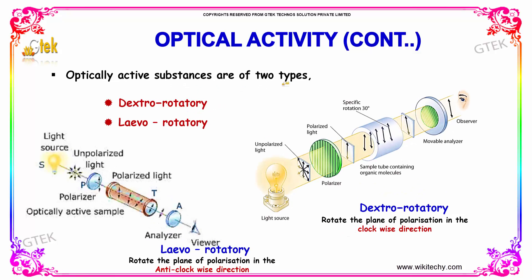Optically active substances are of two types: dextrorotatory and levorotatory. Dextrorotatory substances rotate the plane of polarization in the clockwise direction, as shown in the diagram. Whereas levorotatory substances rotate the plane of polarization in the anticlockwise direction.